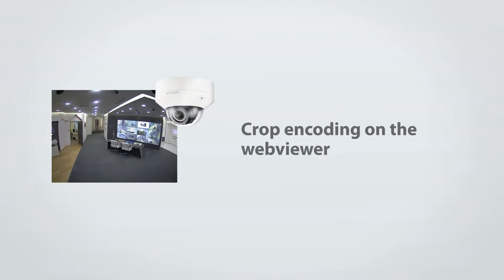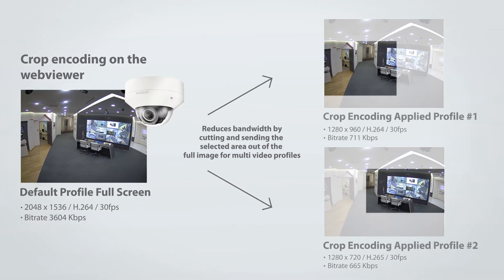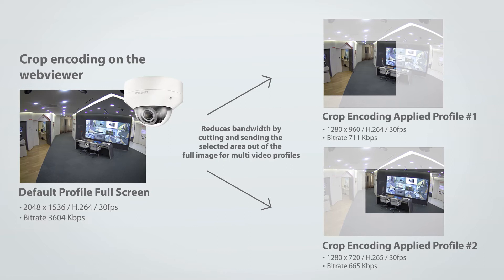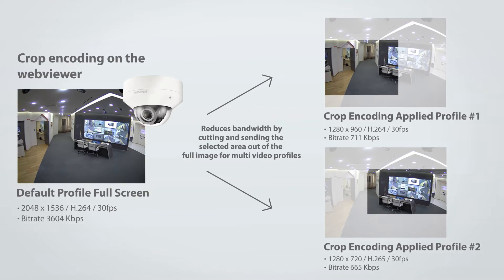Crop encoding is a function which only cuts the desired area from a full image and generates outputs with the supported resolution for multi-video profiles. This helps reduce the image size and the bandwidth, as you can cut and send only the desired part of the image.